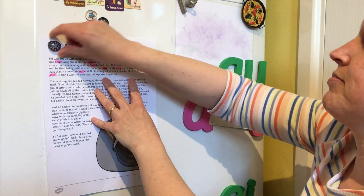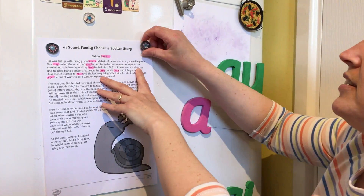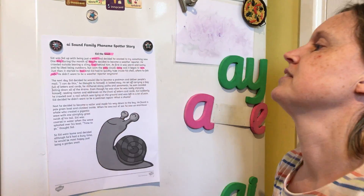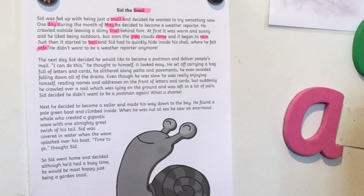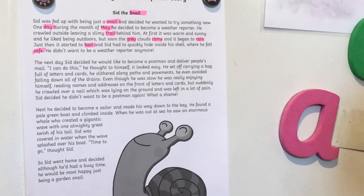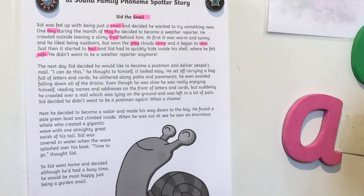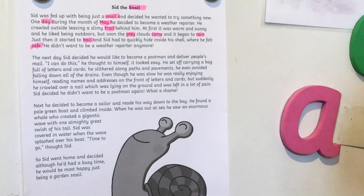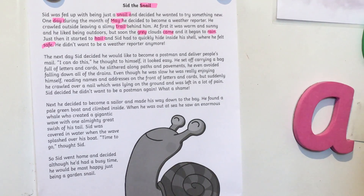So here's our story. I'm going to read you the whole thing and then we're going to look for the A words. Sid the snail — remember 'snail' had an A word in it. Sid was fed up with being just a snail and decided he wanted to try something new. One day during the month of May he decided to become a weather reporter. He crawled outside leaving a slimy trail behind him. At first it was warm and sunny and he liked being outdoors but soon the grey clouds came and it began to rain.